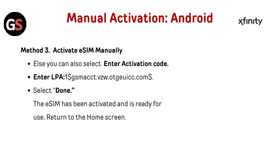For manual activation on Android — Method 3 — you can also select Enter Activation Code. Enter LPA:1$gsmacct.vzw.otguicc.com, then select Done. The eSIM has been activated and is ready for use.